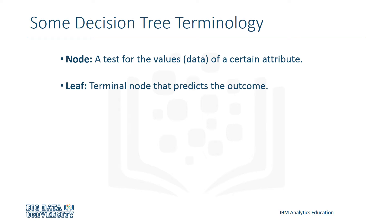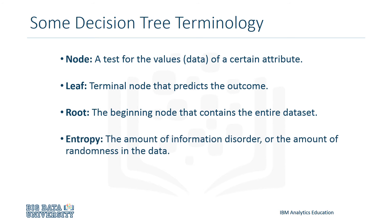Next is a leaf node, which is the terminal node in the tree that predicts the outcome. There is also a root node, which appears at the top of the tree and contains the entire dataset for that tree. Next, we have the term entropy.